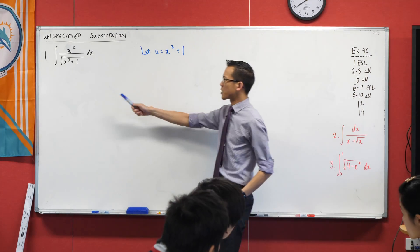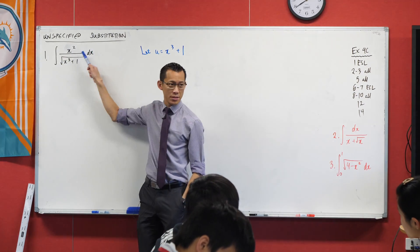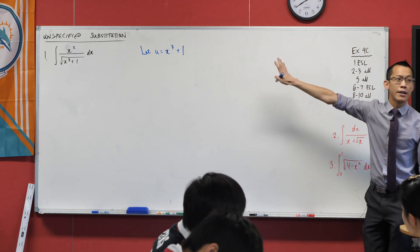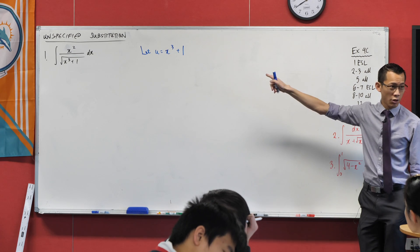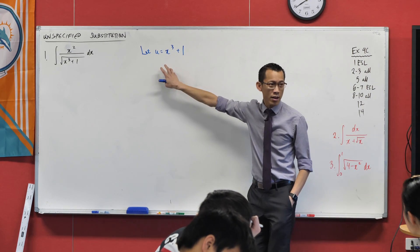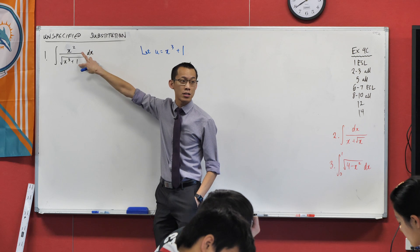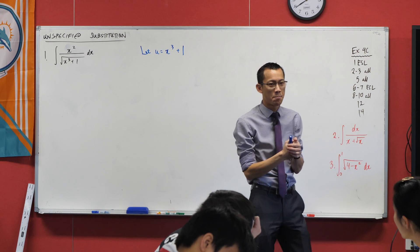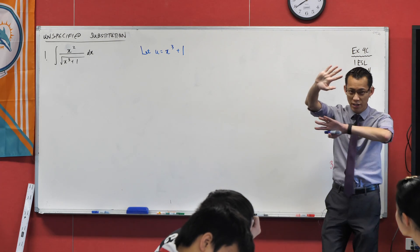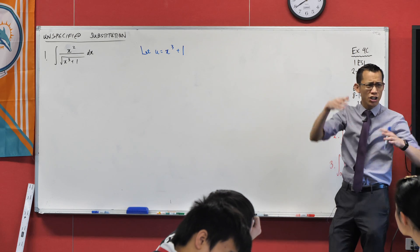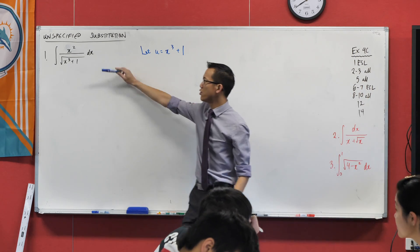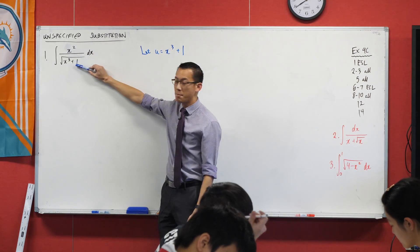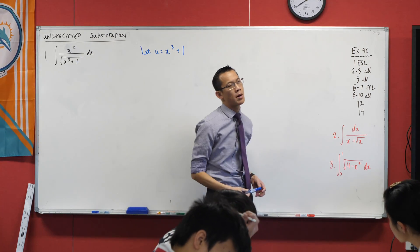Would anyone like to make a suggestion? Let u equal what's underneath the radical sign in the denominator. So, if I go x cubed plus 1, this is a good choice. It's good because you can see what's problematic about this is this square root business. It's almost like if that square root wasn't there, just visualize it for a second, if the square root wasn't there, you can tell me almost immediately what would this integrate into without the square root sign?